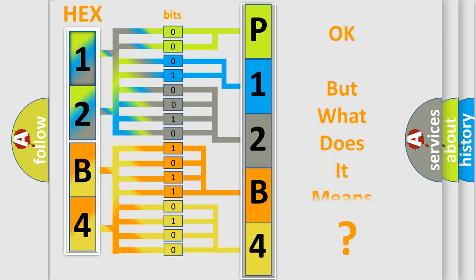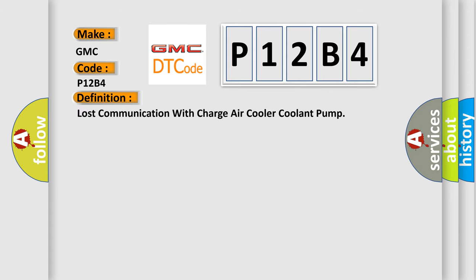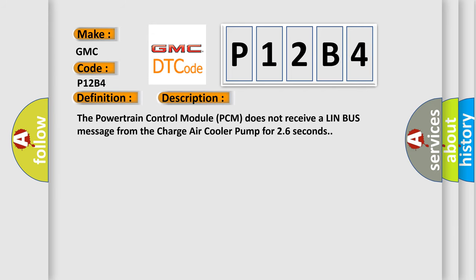We now know how the diagnostic tool translates the received information into a more comprehensible format. The number itself does not make sense if we cannot assign meaning to what it expresses. So, what does the diagnostic trouble code P12B4 interpret specifically for GMC car manufacturers? The basic definition is: Lost communication with charge air cooler coolant pump. The powertrain control module (PCM) does not receive a LIN bus message from the charge air cooler pump for 26 seconds.